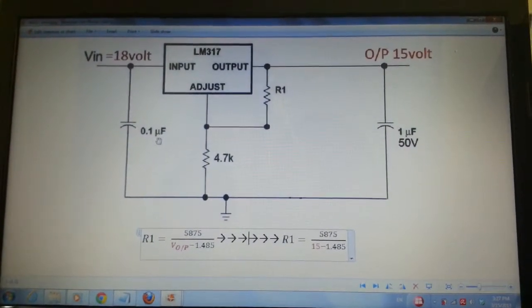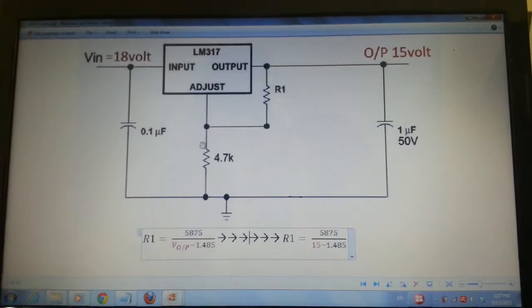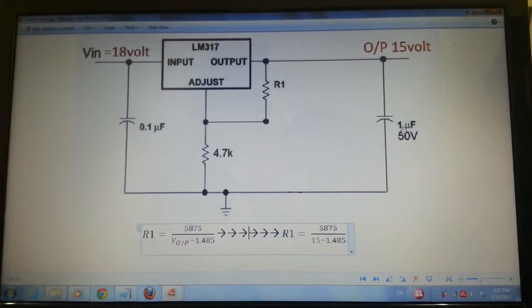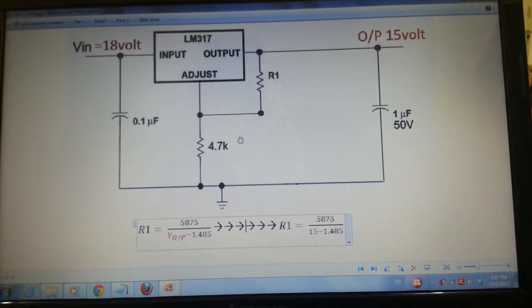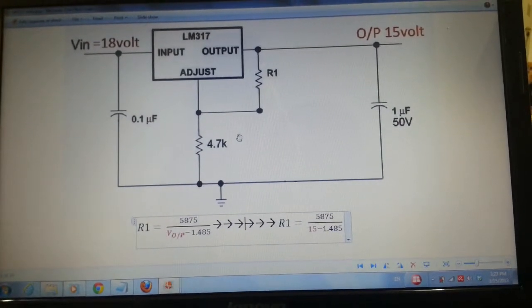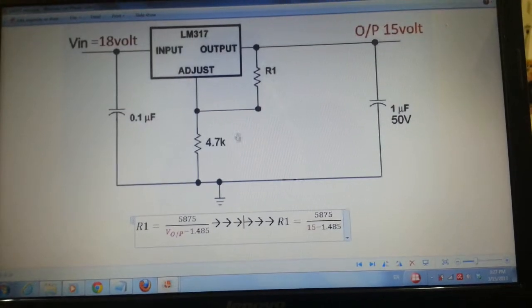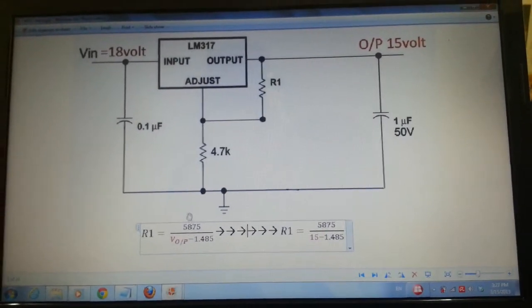Here's the setup. I need a 0.1 microfarad ceramic capacitor and a 1 microfarad electrolytic capacitor, and I need two resistors, R1 and R2. I fixed R2 to be 4.7 kilo ohms, so I have this equation, a simple equation.